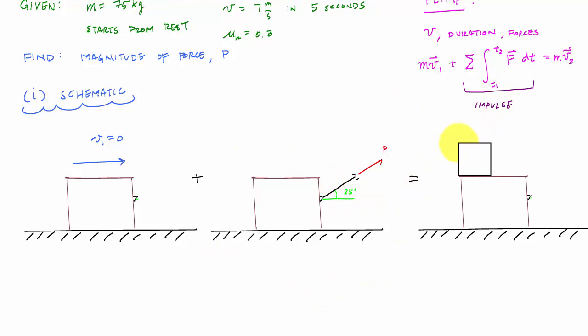So I know this V1 equals zero plus all my external impulses is equal to the mass times the velocity at stage two. So that V2, which is seven meters per second, and it's just horizontal. So you can see how my schematic matches the principle of linear impulse and momentum.